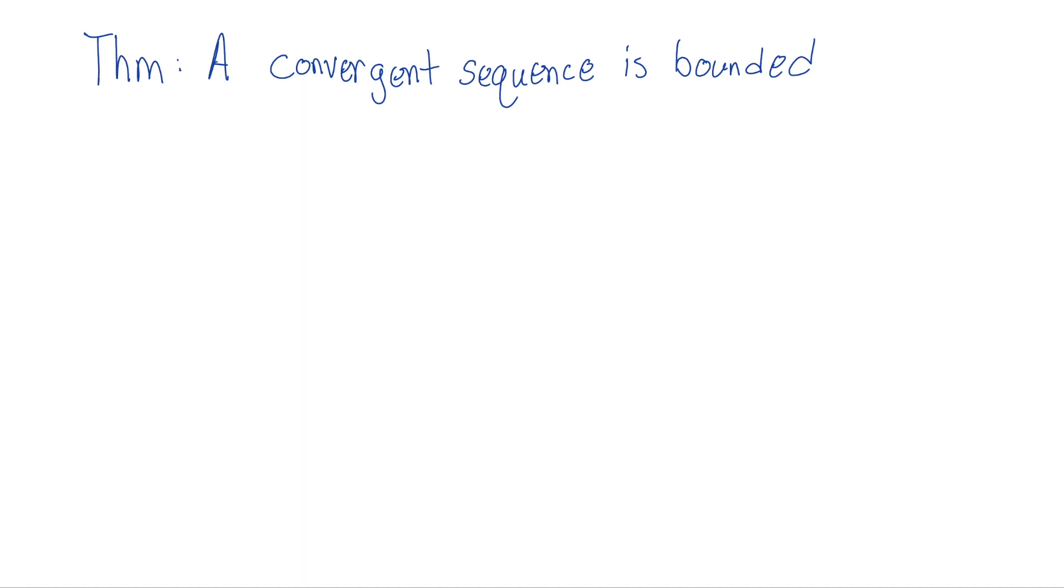We're going to prove this statement that a convergent sequence is bounded. Let's assume that we have some convergent sequence. So let's let, I'll call it a sub n, this is our sequence, be convergent. And let's say it converges to its limit L. L will be the limit of this.